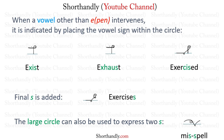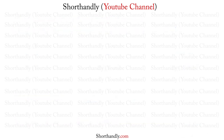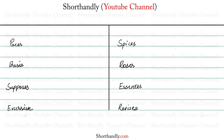Now let's take some examples so that we can look into this practically. The first word is PASSES. We see that we have SES in this word, so to represent this SES sound, we will simply be making the large circle. This PASSES word will be written like this.